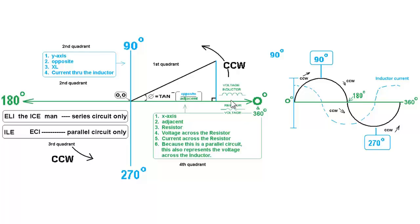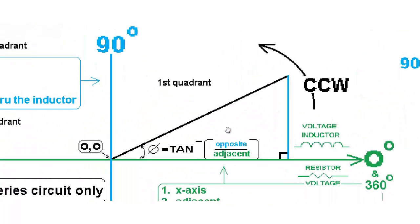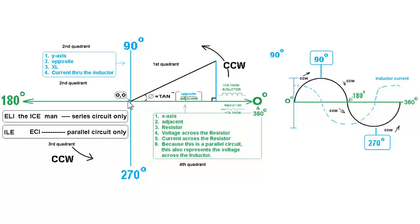My graph shows how you find the current relationship between the resistor and the inductor using the first quadrant. The horizontal axis is the x-axis — also called the adjacent — adjacent to this angle. The blue vertical line is the side opposite this angle. You divide the opposite by the adjacent, take the arc tangent of that value, and you get the phase angle.